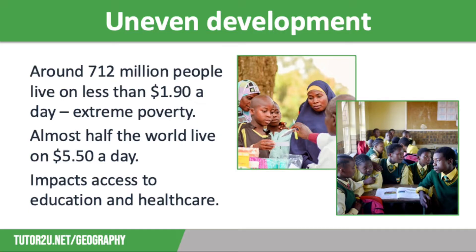Uneven development has significant impacts and has resulted in huge inequalities around the world, particularly in terms of wealth. The World Bank estimates that currently around 712 million people are surviving on less than $1.90 a day. This figure is used as a benchmark for those living in extreme poverty — those who lack proper access to nutrition, clean drinking water and adequate healthcare. However, the World Bank also estimates that almost half of the global population is living on $5.50 a day, meaning that they will also be struggling to meet their basic needs.